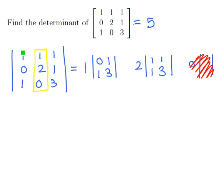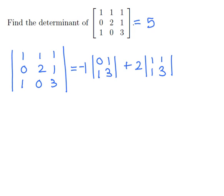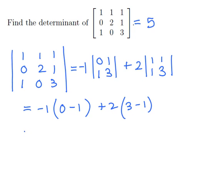Next, using the checkerboard mnemonic of plus, minus, plus, minus, we can see that we need to attach a negative sign to the 1 and a positive sign to the 2, and technically speaking, a negative sign to the 0. Expanding the smaller determinants, we're going to have minus 1 times 0 minus 1, plus 2 times 3 minus 1. That's going to get us negative 1 times negative 1, plus 2 times 2, which would be 1 plus 4, and once again we see that we have a determinant of 5.